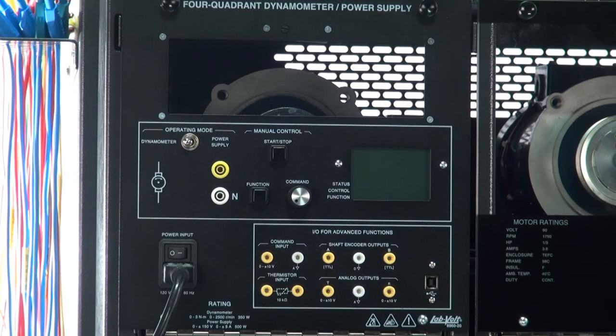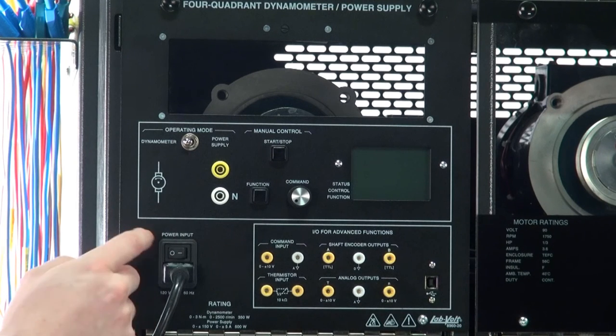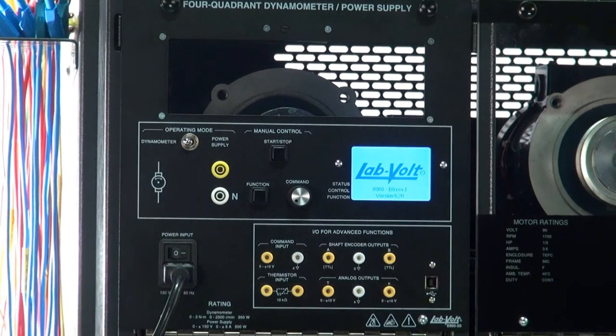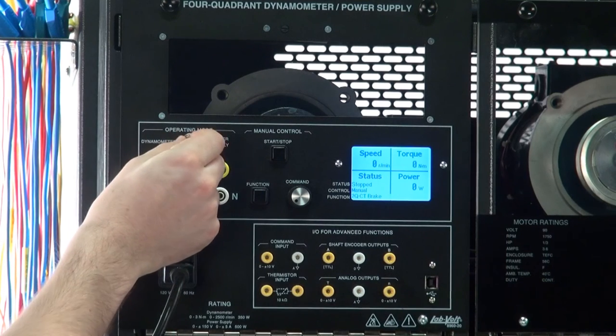Start by connecting this power cable to a wall receptacle, and then turn this switch to the on position. Wait for the LabVolt logo to disappear, then use the switch under operating mode here to select the power supply option at right.